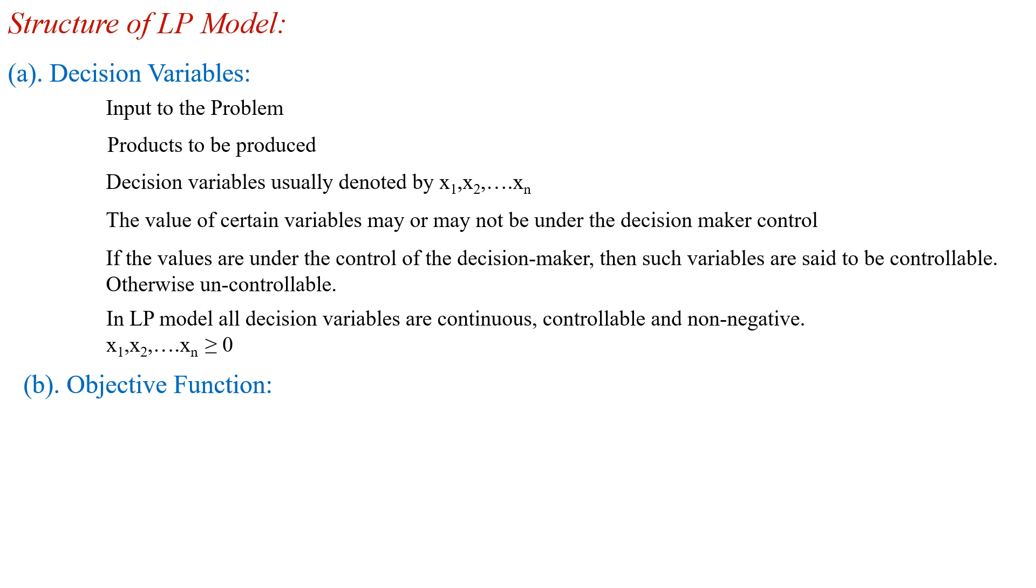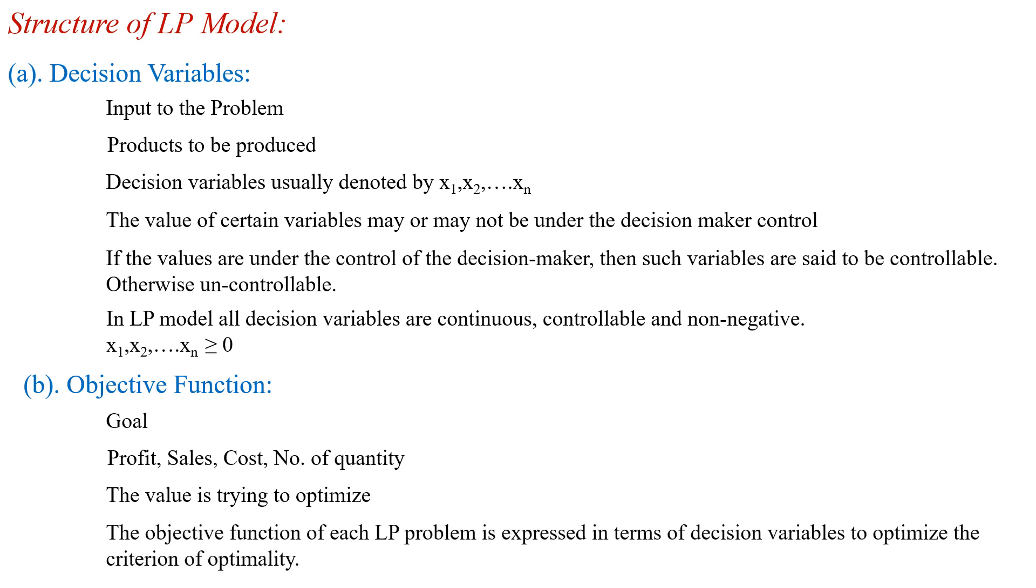Next we have to see what we mean by objective function. Objective function is, in general, the goal of any company. The goal of any company should be the profit or maybe the sales or maybe cost or maybe number of quantity. This objective function value is, here we are trying to optimize, which means we have to go for the maximum profits or maximum sales or minimum cost or we have to use the minimum number of quantity. The objective function of each LP problem is expressed in the term of decision variables to optimize the criterion of optimality.